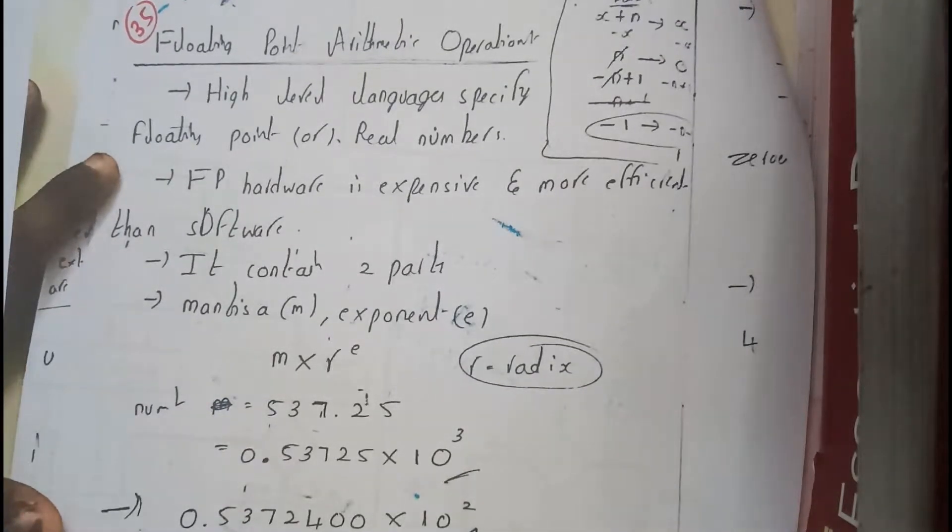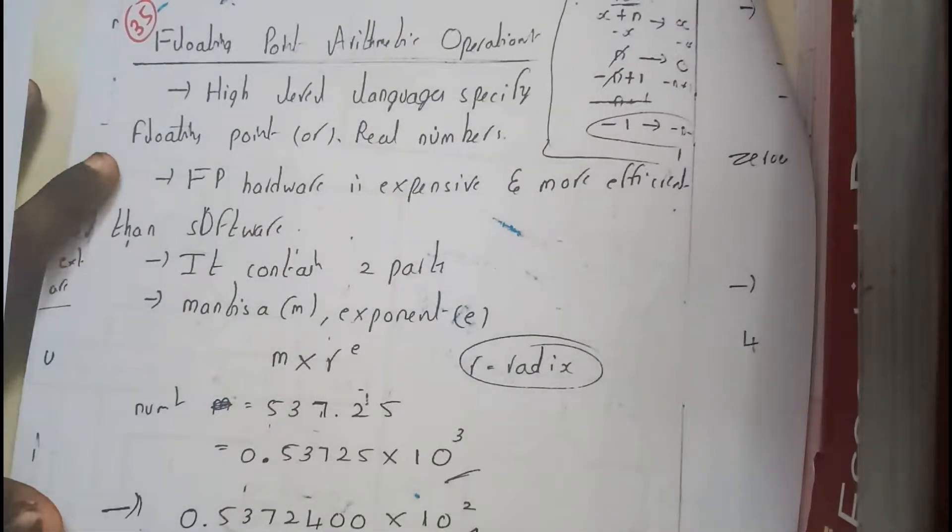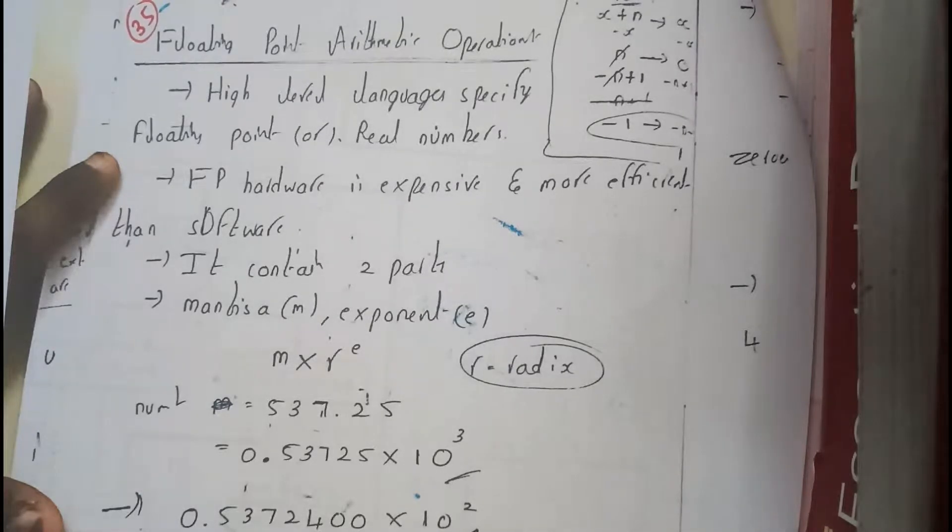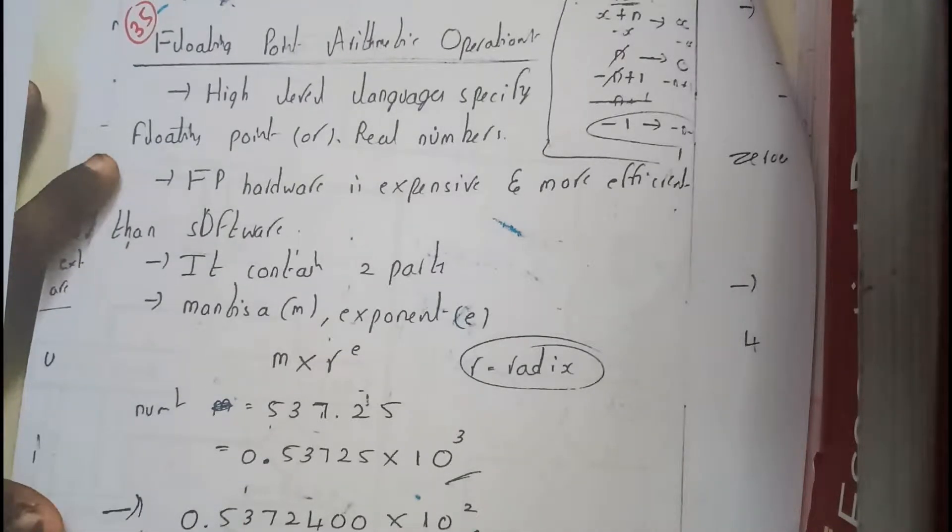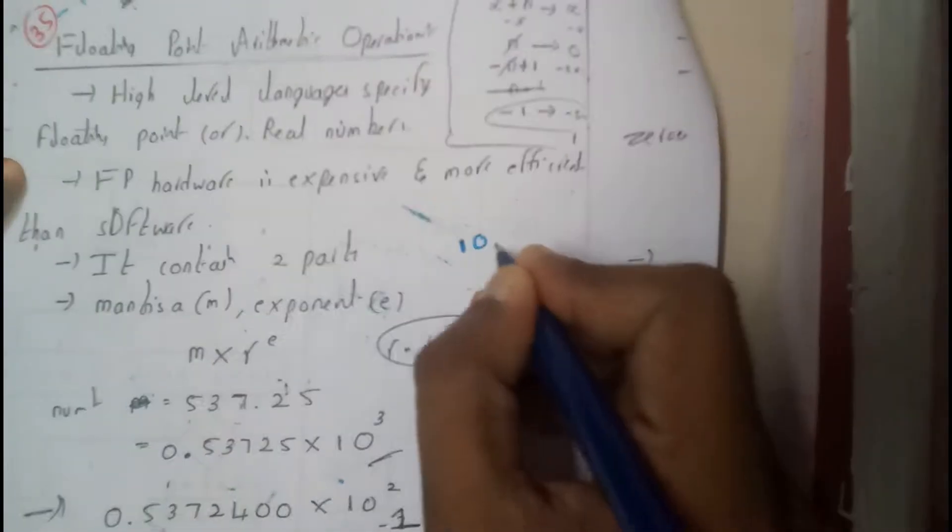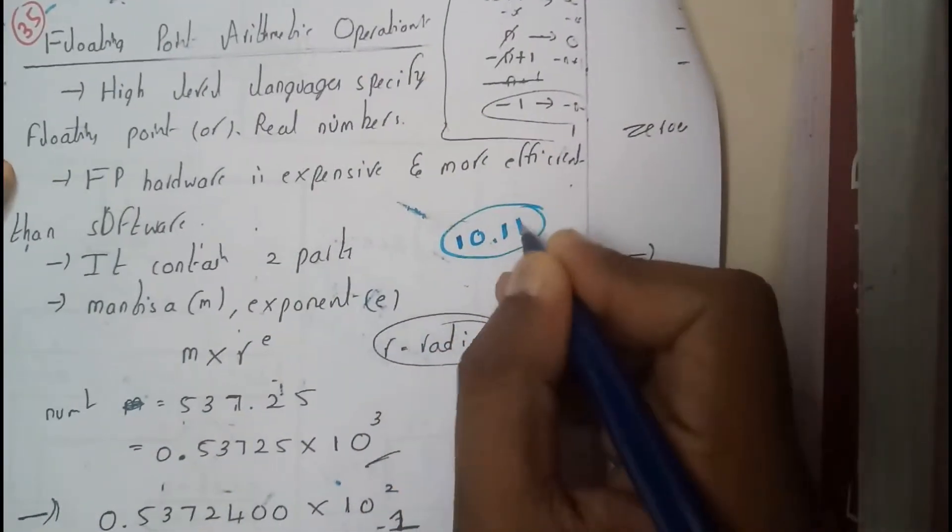Hello guys, we are back with our next tutorial. In this tutorial, let us go through the introduction of floating-point arithmetic operations. Basically, even the operations in complex computers or complex programming, we will be using floating points. Floating points are nothing but decimal numbers, like 10.11. This part we will be calling the floating part.